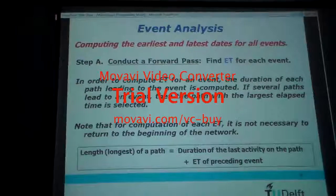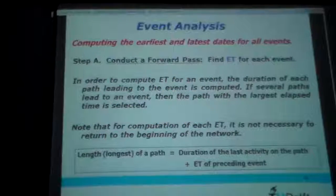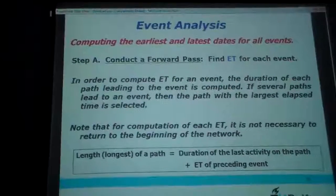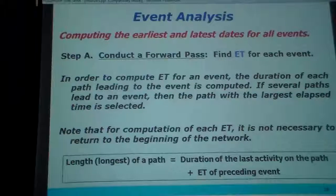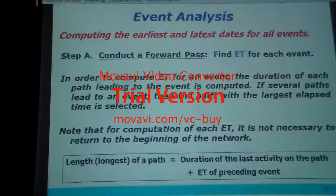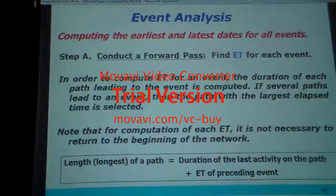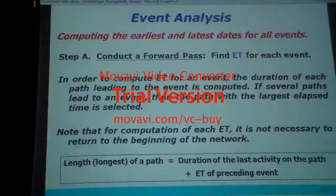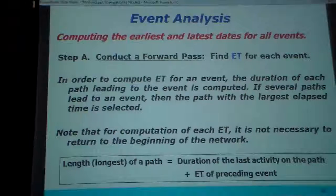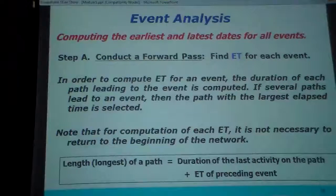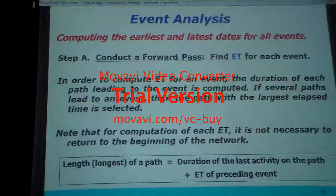Step five: conduct a forward pass — that is to find ET, the early time for each activity, and late time for each activity. We have to do like this — that's your next step. In order to compute early time for an event, the duration of each path leading to the event is computed. If similar paths lead to an event, then the path with the largest elapsed time is selected.